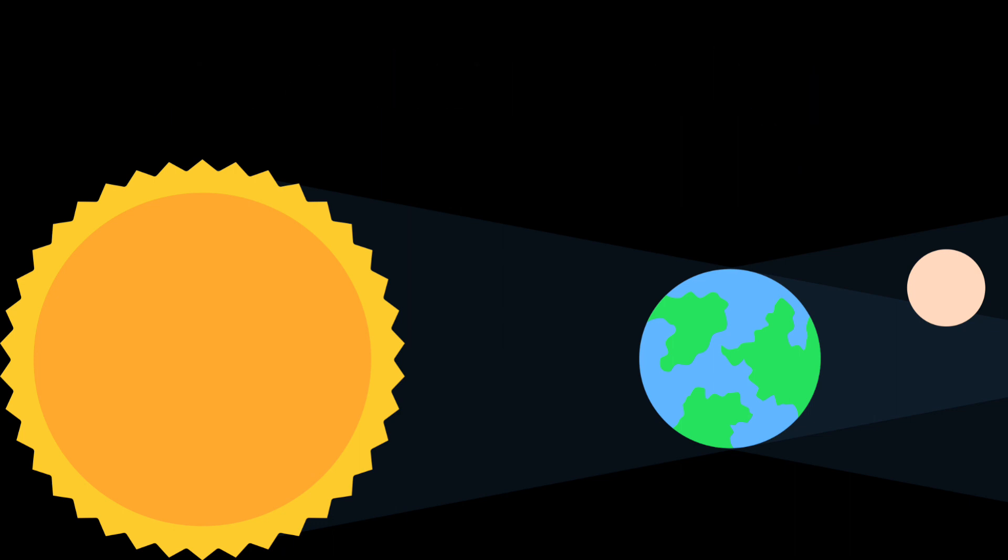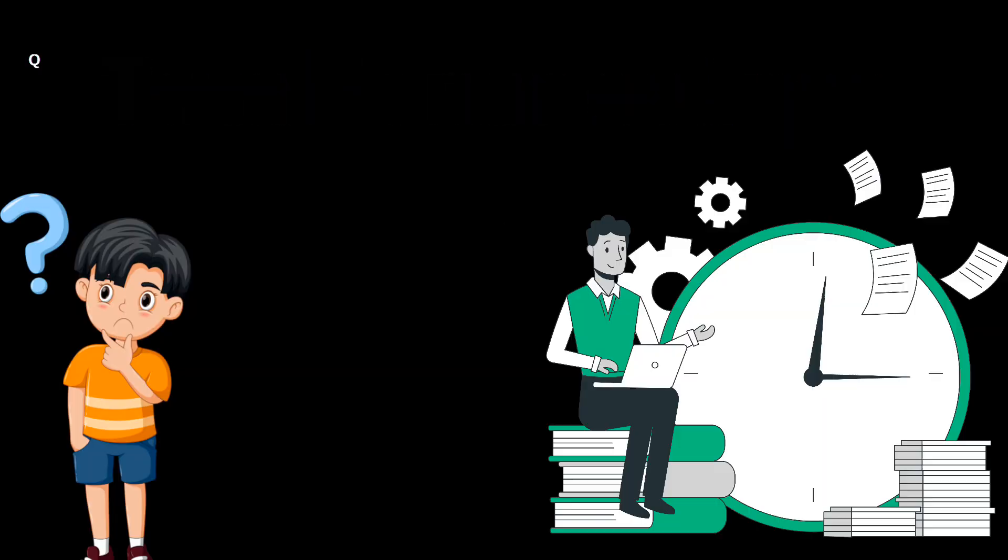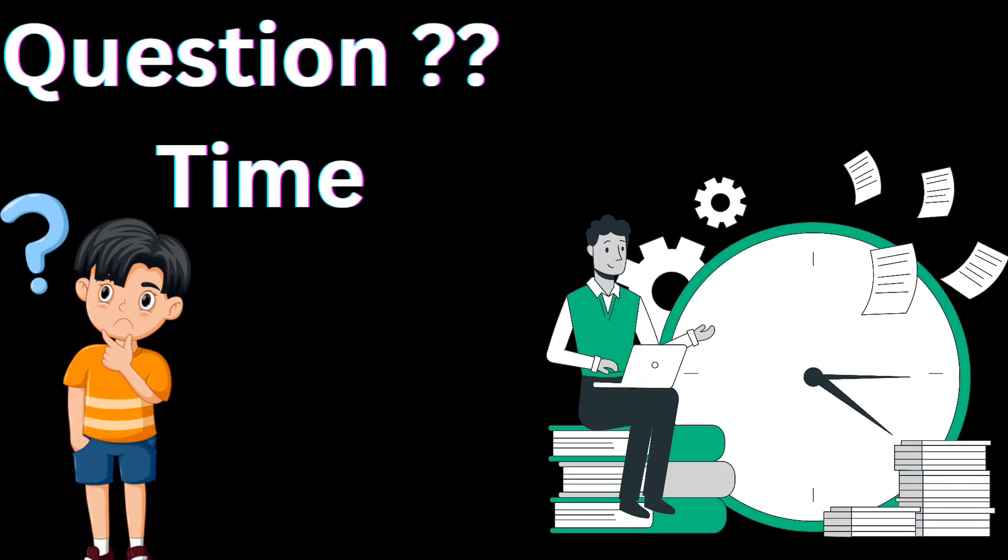When the Moon lies in the umbra cone of the Earth, the Moon does not get any light and appears completely dark. This phenomenon is called a total lunar eclipse.